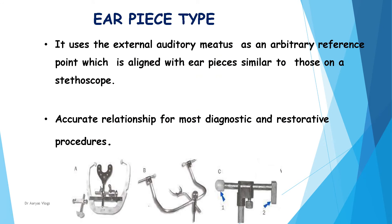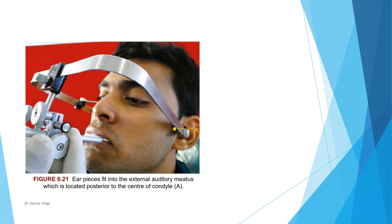Coming to the earpiece type: it uses the external auditory meatus as an arbitrary reference point, which is aligned with earpieces similar to those on a stethoscope. It provides accurate relationship for most diagnostic and restorative procedures. The posterior reference point is the external auditory meatus, and the anterior reference point is orbitale. The earpiece is engaged into the external auditory meatus. In this type, the external auditory meatus is considered as the reference point to determine the center of condylar rotation.